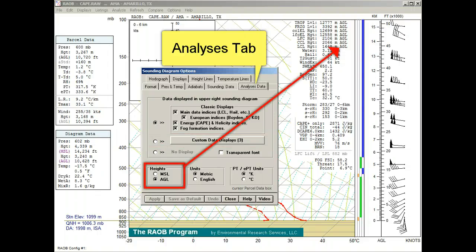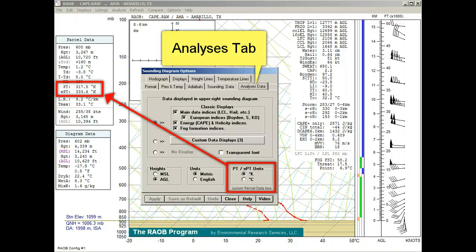This heights option specifies which mode to use for parameters in the displayed data listings. The units option specifies metric or English units, such as centimeters versus inches for hail diameter. The potential temperature equivalent potential temperature unit section allows specification of Kelvin or Celsius units.